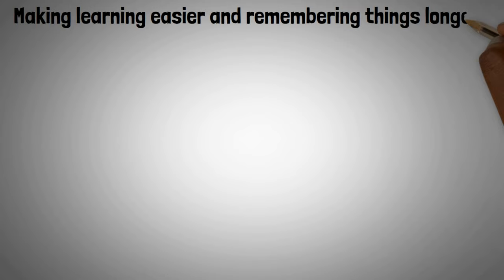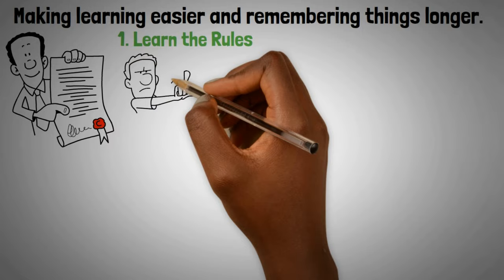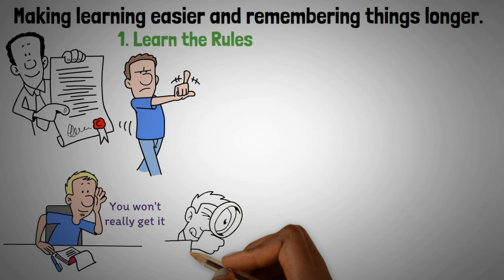Now let's talk about making learning easier and remembering things longer. First, you need to understand what you're learning fully. Step one, learn the rules. Remembering facts isn't enough. If you only memorize what you read or hear, you won't really get it. It's better to find the big rules that are behind all the examples. These rules help you figure things out in real life.